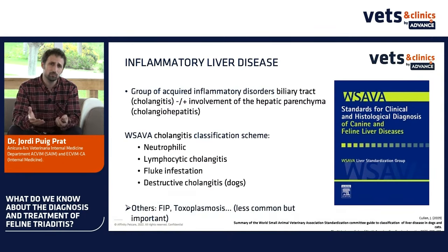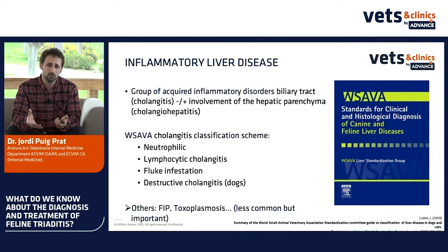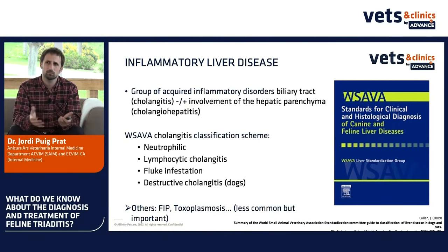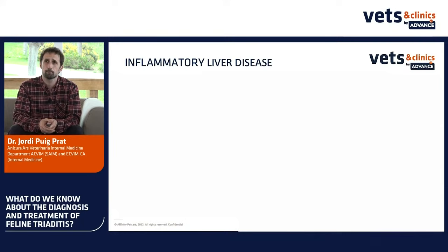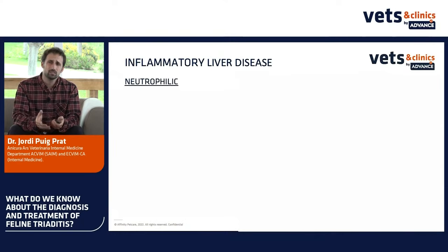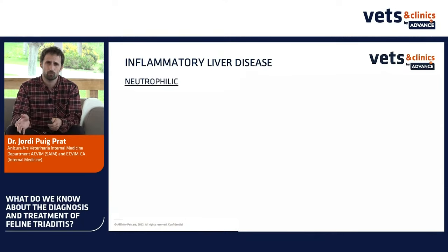It's important for clinicians to know that FIP and toxoplasmosis can be a cause of cholangiohepatitis. We know they are less common, but they are important to keep in mind. When we discuss inflammatory liver disease, we talk about the neutrophilic form and the lymphocytic form.